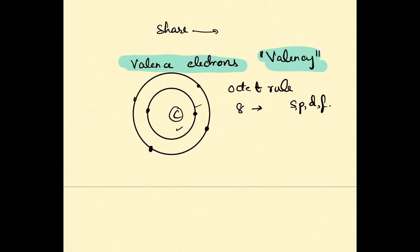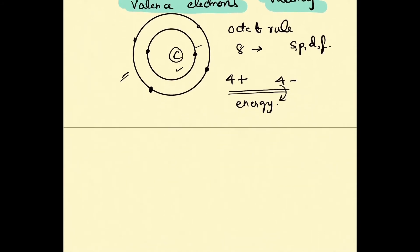To be stable, carbon requires four more electrons, or it needs to lose all four of its valence electrons. But this is really difficult for carbon to do—it requires a lot of energy whether losing or gaining electrons.